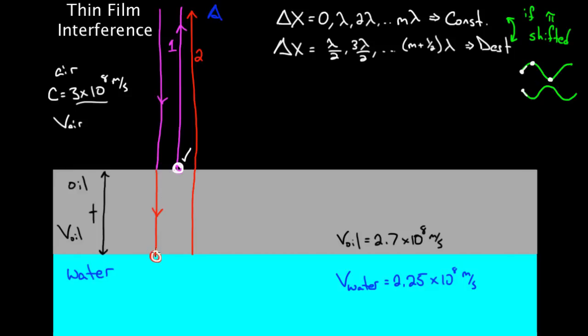How about this one down here? Did it reflect off of a slow medium? It did. It was in oil. It would have traveled into water, which is slower than the oil, and so this one also gets a pi shift. Same thing. If it came in as a peak, it will leave as a valley. What does that mean for this condition up here? Well, if both are pi shifted, it's as if neither of them get shifted. If we flip both of them upside down, everything's cool again. So, we would not swap these conditions in this case.